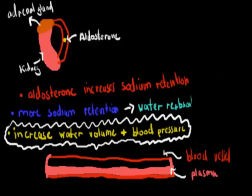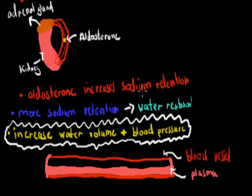Let's quickly recap what aldosterone was from the last video. Aldosterone was produced at the adrenal gland. It's a hormone that travels from the adrenal gland all the way to the kidney. In the kidney, it increased sodium retention. And remember, when you increase your sodium, you also increase your water absorption, because water goes from low solute to high solute.